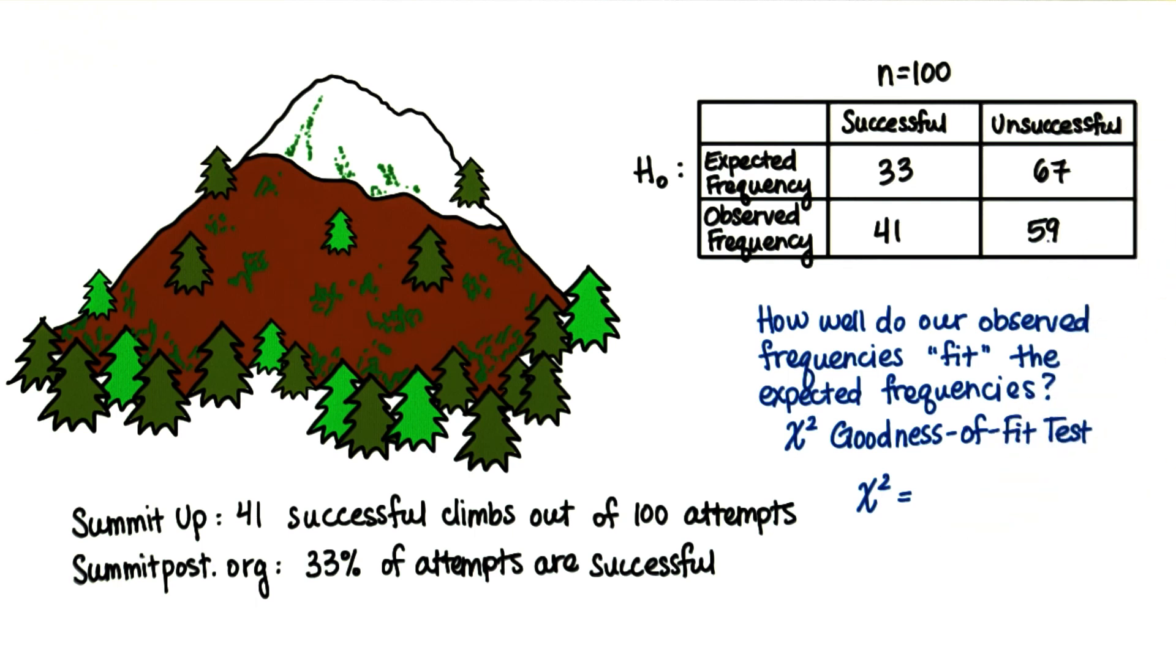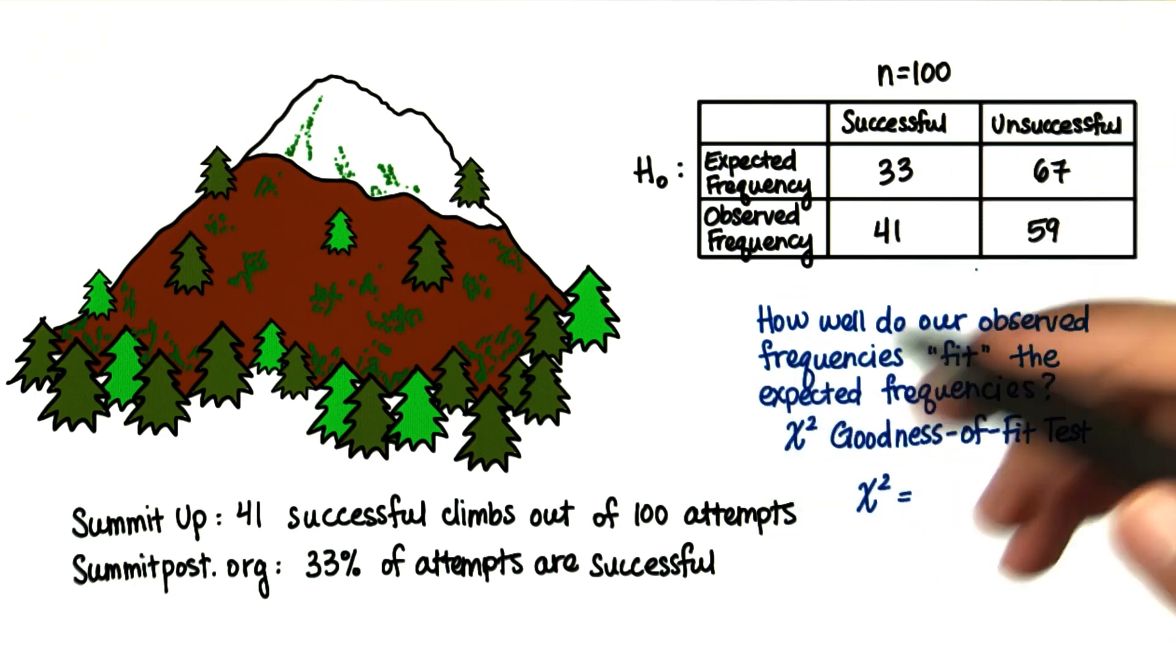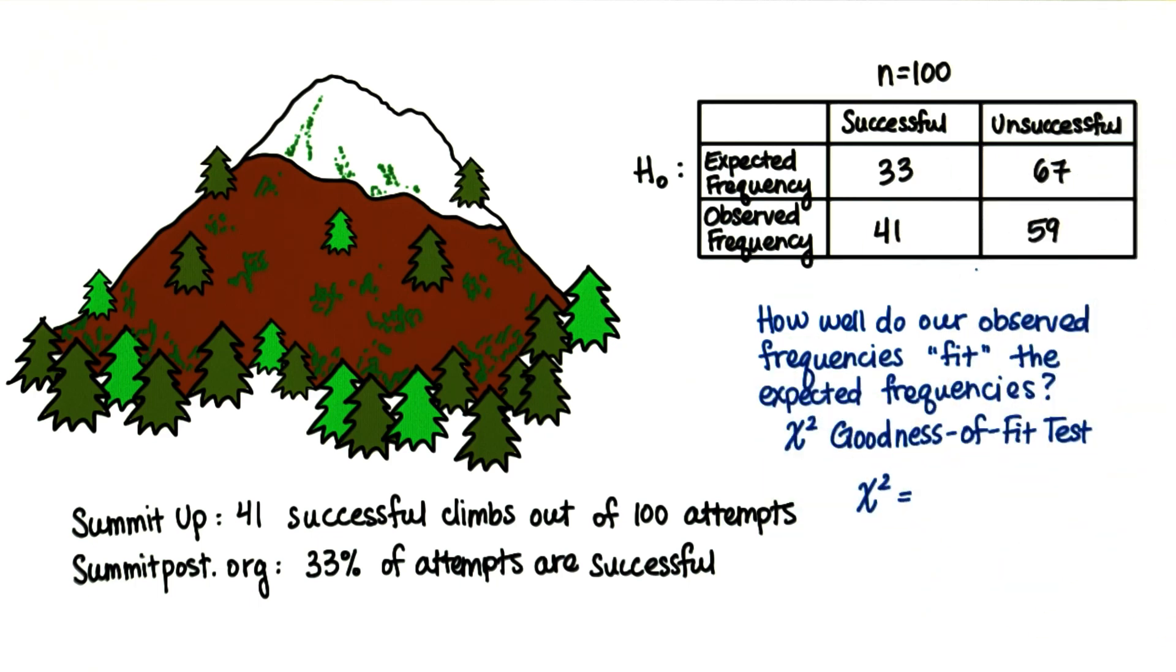How would you statistically show that the observed frequency is greater or less than the expected frequency? Would you subtract one from the other? Would you add things? Multiply or divide things?